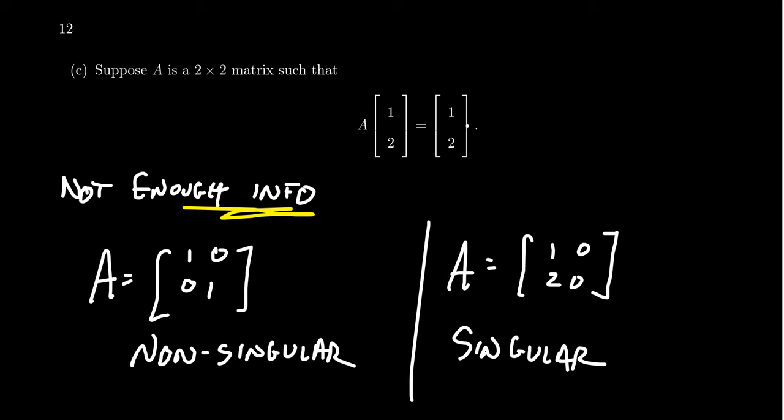That brings us to the end of section 3.3 about matrix inverses, but not the end of our conversation about inverse matrices. With the non-singular matrix theorem, we've learned ways of identifying when a matrix has an inverse and when it doesn't. But when it does have an inverse — with the exception of two-by-two matrices — we don't yet have an algorithm to find what that inverse is. That will be remedied in section 3.4, where we'll introduce elementary matrices as a tool to compute the inverse of a non-singular matrix. Thanks for watching — please hit the like button, subscribe for more linear algebra videos, and post any questions in the comments below.